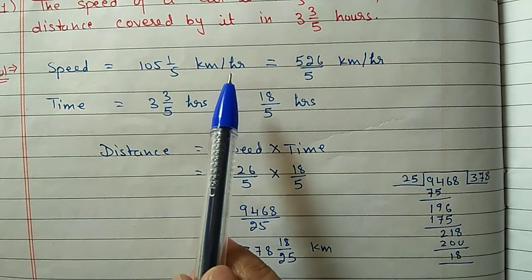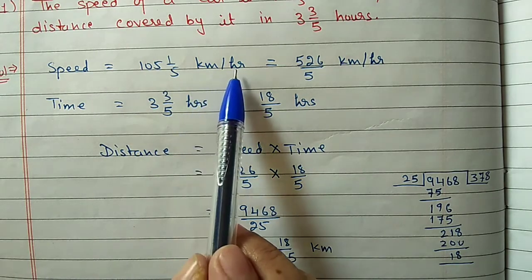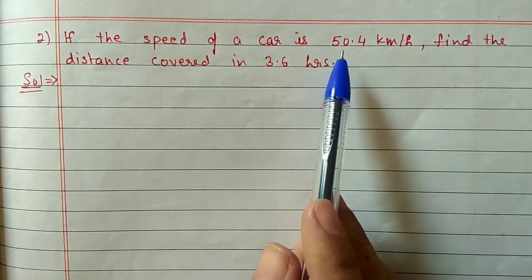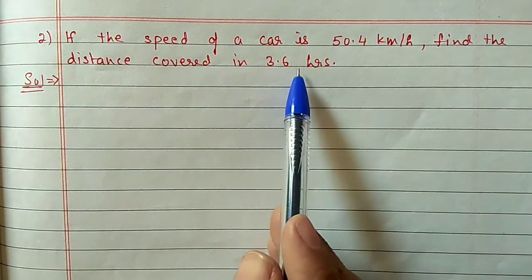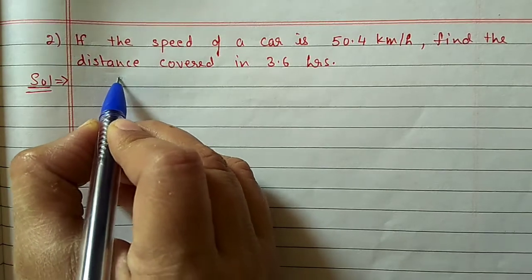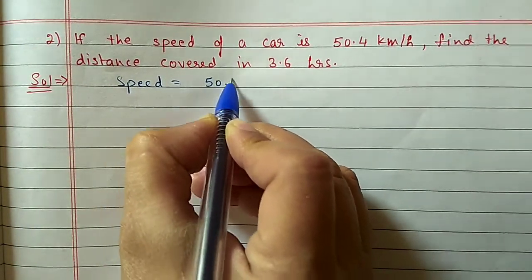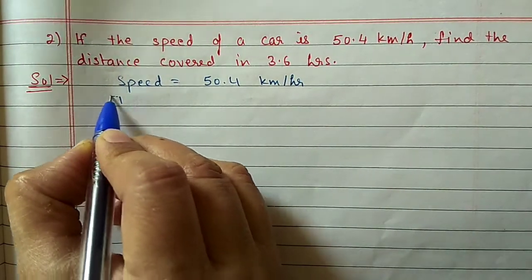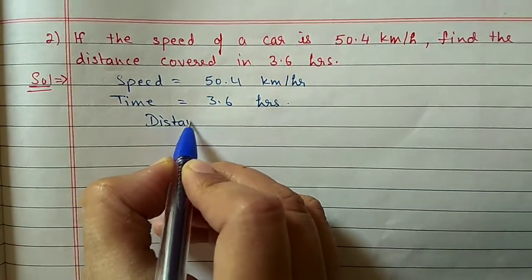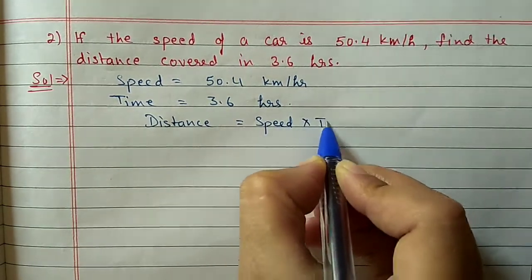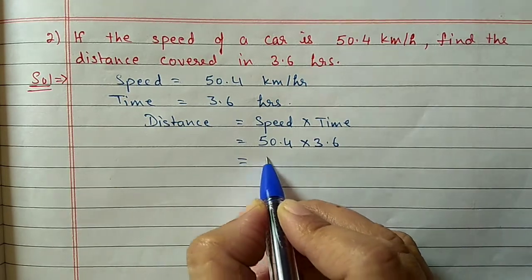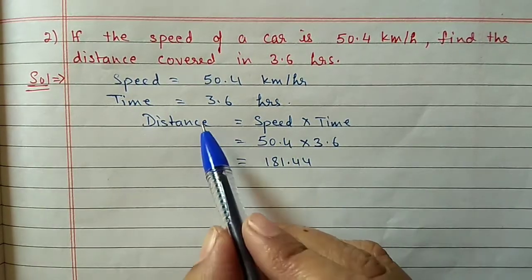When doing problems, first check that the time unit matches — if speed is in km/hr, time should also be in hours. Question 2: The speed of a car is 50.4 km/hr. Find the distance covered in 3.6 hours. The time unit is consistent. Speed is 50.4 km/hr and time is 3.6 hours. Distance equals speed into time: 50.4 × 3.6 = 181.44 kilometers.